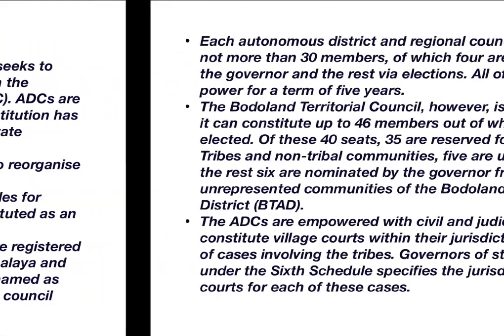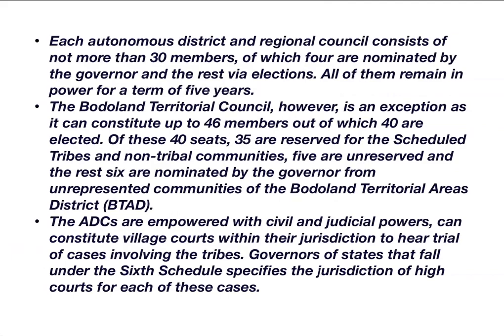Regarding administration, an autonomous district council has not more than 30 members, of which four are nominated by the governor and twenty-six are elected. The term of the council is five years. This is similar to our Parliament — in Parliament, 552 members include those elected from states, those elected from union territories, and two nominated from the Anglo-Indian community. Similarly, in autonomous district councils, the governor can nominate four members.